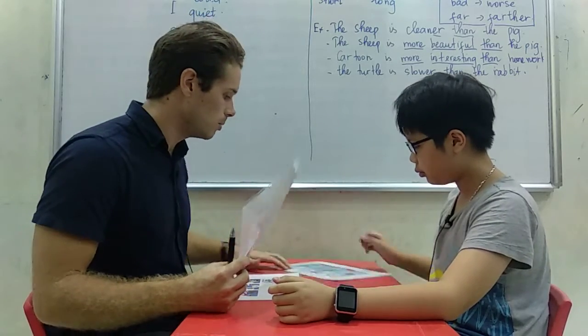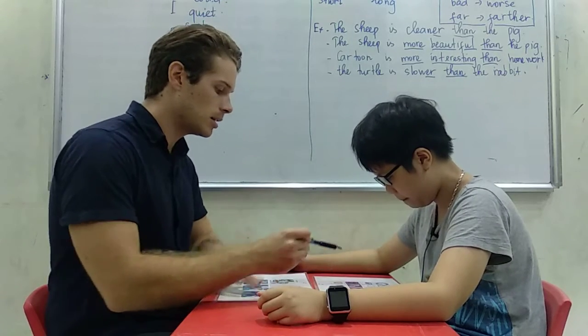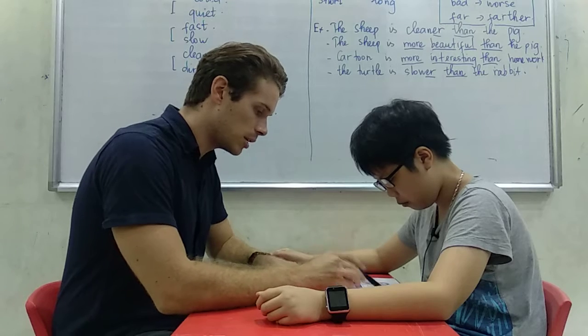Good. Thank you. All right, next part. We define the odd one out in the row and explain why it's different to the others. I'll do the first row and you can do the rest, okay?